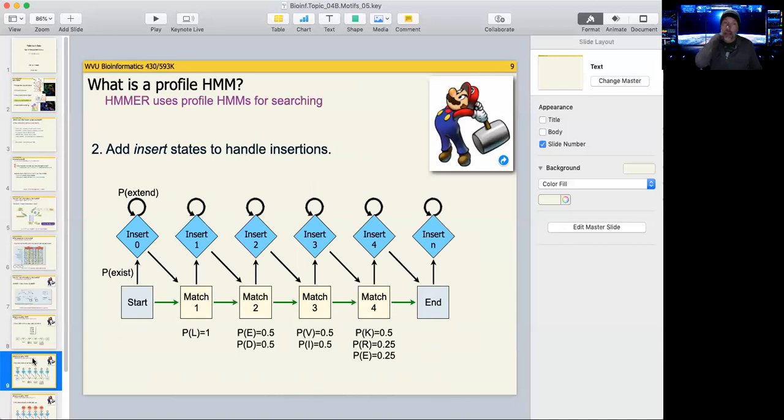You can add to that profile HMM states that represent insertions. So you can calculate a probability again based on the multiple sequence alignment that there is an insertion here. For example, if 50% of your sequences have an insertion, this insertion might have a probability of 0.5.